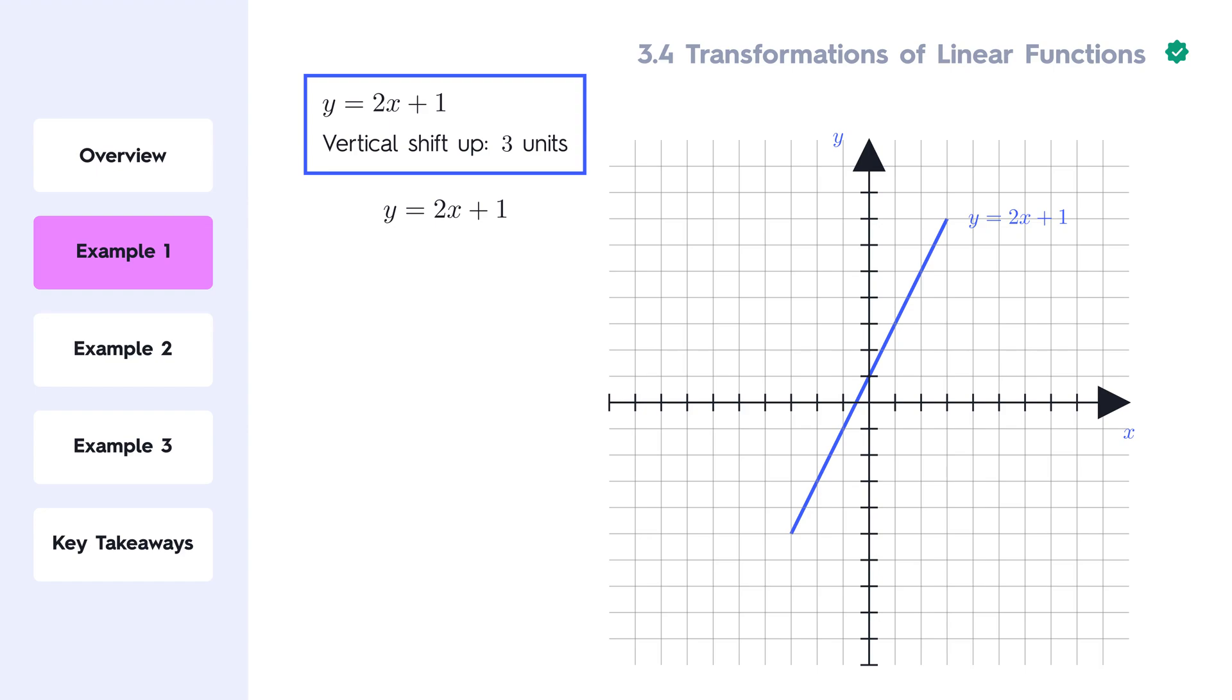A vertical shift means we will add or subtract a constant to the entire function. Since we're shifting the graph 3 units upwards, we add 3 to the function's output.